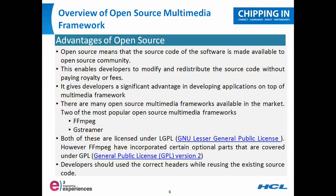Now that we've covered what a multimedia framework is, why are we going for open source? What are the advantages that open source gives over proprietary software? Open source means the source code of the software is made available to the open source community, enabling developers to modify and redistribute the source code without paying royalties or fees. This gives developers a significant advantage in developing applications on top of a multimedia framework. Two of the most popular open source multimedia frameworks right now are FFmpeg and GStreamer, and I'll be covering FFmpeg today.